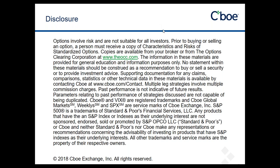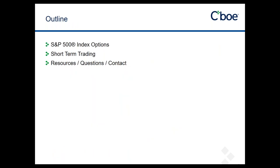We've actually gone through a name change over the past couple of months. We are now CBOE Global Markets. We merged with BATS about a year ago, and now we're involved in equities, European equities, FX, VIX futures, Bitcoin futures, and of course equity options and index options. We updated our name to match up with a more global presence. Today I'm going to talk about S&P 500 index options, give you some trading examples and resources, and answer as many questions as I possibly can.